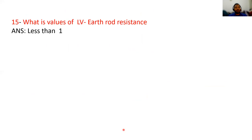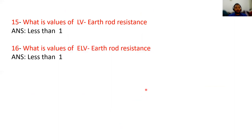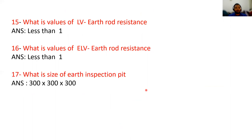For a 1200 A system, the switch room is 4.5 m × 5 m, and for 500 A it is 4 m. The value of LV earth rod resistance: if the value is less than 1 ohm, it is required. The ELV earth rod resistance is also required to be less than 1 ohm.